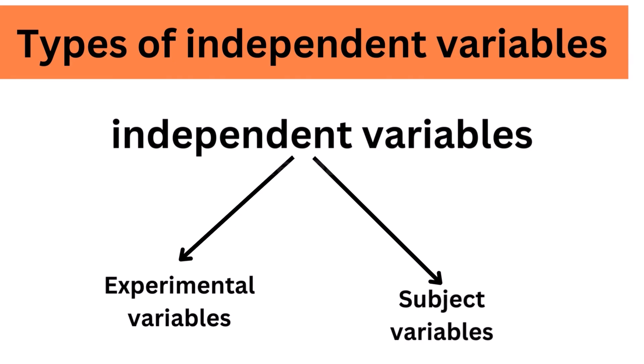There are two main types of independent variables. Experimental independent variables can be directly manipulated by researchers. Subject variables cannot be manipulated by researchers, but they can be used to group research subjects categorically.